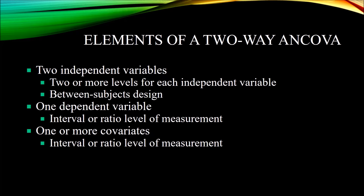Let's take a look at the elements of two-way ANCOVA. We have two independent variables, and each independent variable has two or more levels. This is a between-subjects design. In the example using CBT, reality, and existential therapy, each participant belongs to only one of those levels. Similarly, for gender, each participant belongs to either the male or female level.